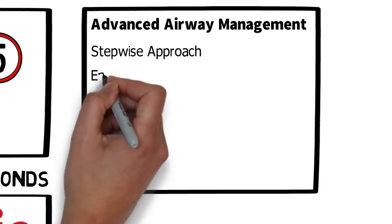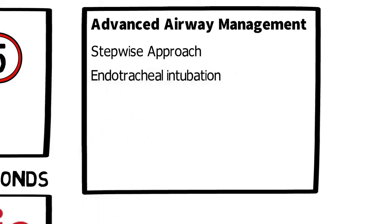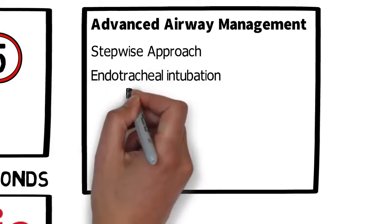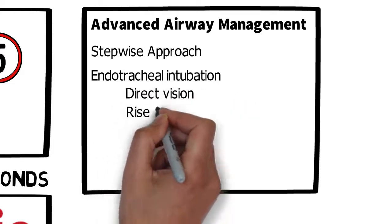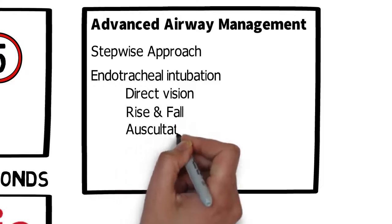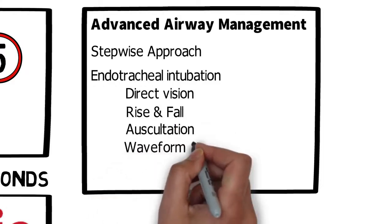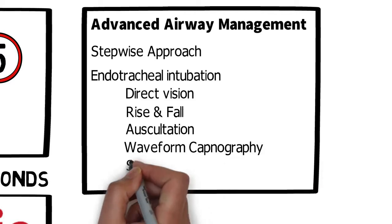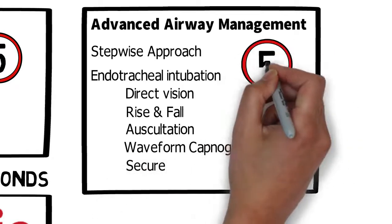We will want to see you conduct endotracheal intubation using an appropriate technique. We'll be looking for the tube to be inserted under direct vision, rise and fall of the chest, auscultation bilaterally and over the epigastric region, waveform capnography to be put in place, and that the tube is secured. Again, no interruption of longer than five seconds of CPR at any point.